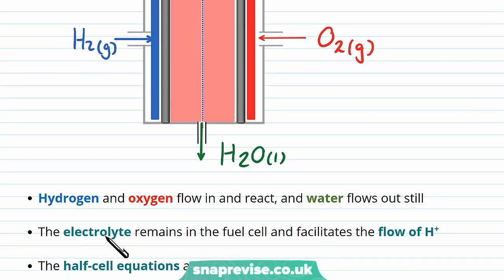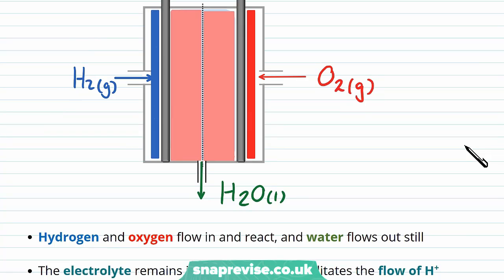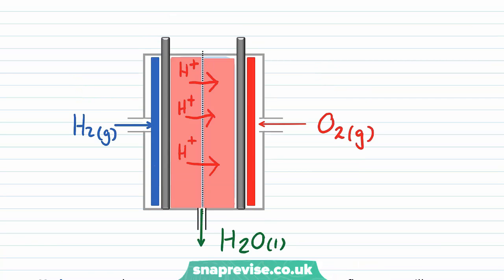however, the direction of ion movement in the electrolyte is the opposite way round, and it's positive H+ ions, which are moving from the hydrogen side of the fuel cell to the oxygen side.